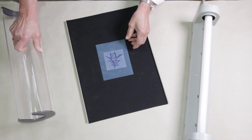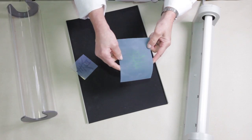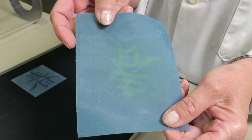The exposed screen will show a yellowish ghost image of the design. The rest of the screen has turned blue.